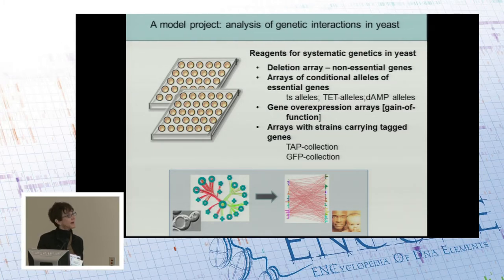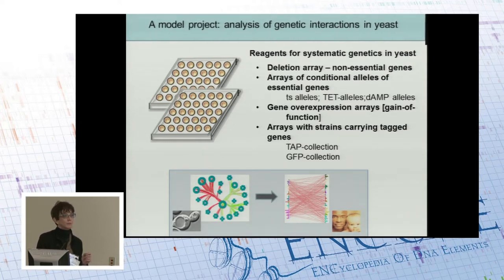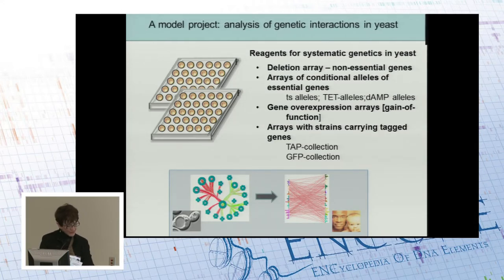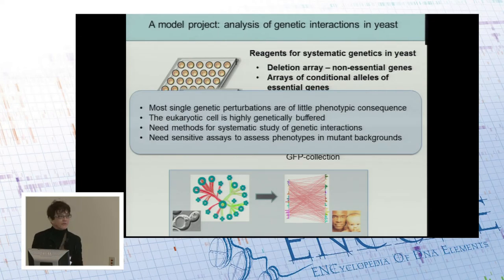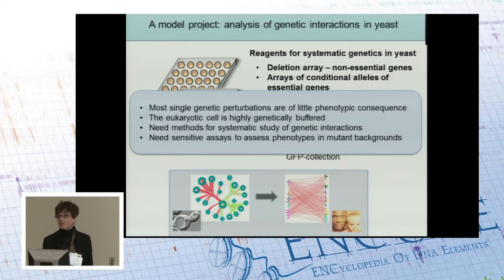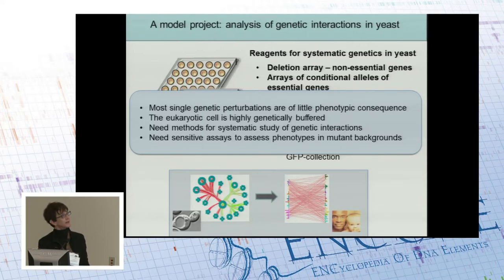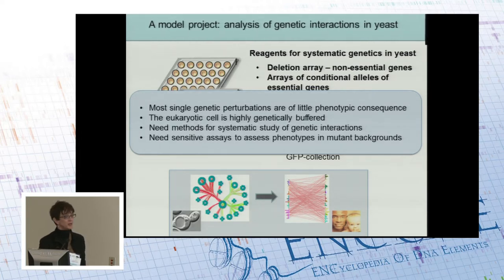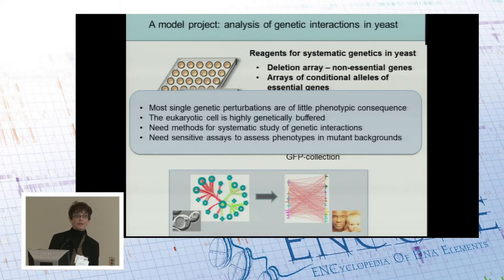We've known this for some time in yeast. The yeast community has spent a lot of time creating reagents for systematic genetics, including the yeast deletion array, which contains about 5,000 strains with complete loss-of-function alleles of all non-essential genes, as well as arrays of strains with conditional alleles of essential genes. Most single genetic perturbations are of little phenotypic consequence — even complete gene deletions do not affect cell growth very much. The eukaryotic cell is highly genetically buffered from the consequences of single genetic perturbations, which has motivated us to develop systematic methods for the study of genetic interactions and to explore phenotypes we can implement at large scale.